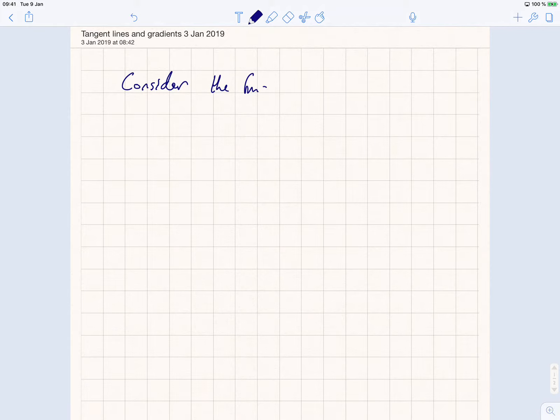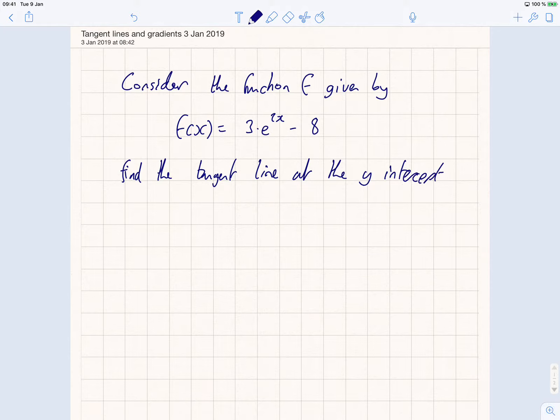Let's just consider that we have a function. Consider the function f given by f(x) is equal to 3 times e to the 2x minus 8. Now, if it says find the tangent line at the y-intercept or where it crosses the y-axis or something like that, therefore, for the y-intercept, we need to let x equal 0.